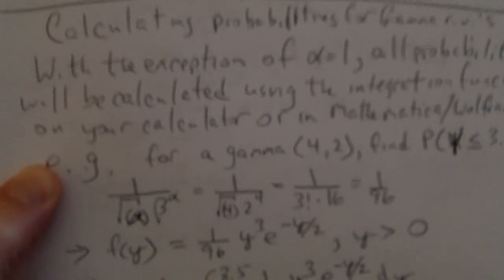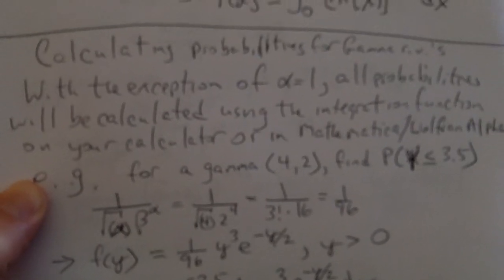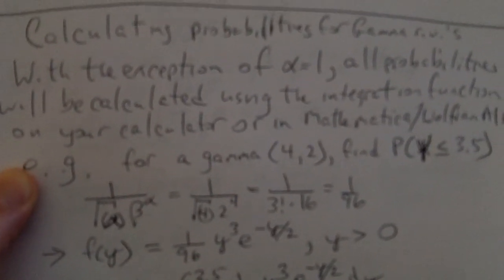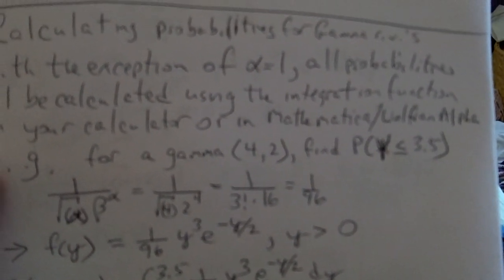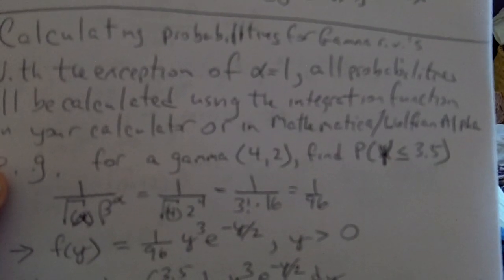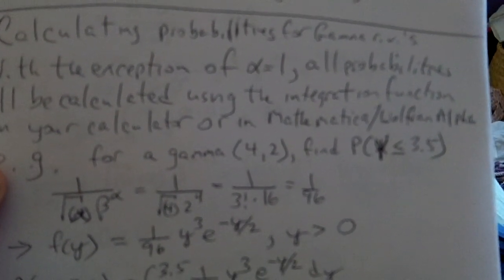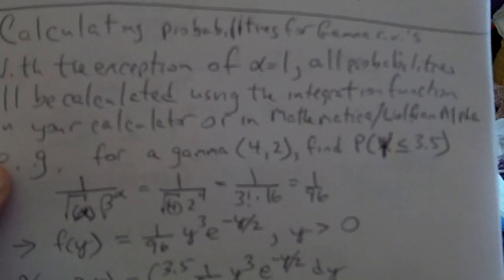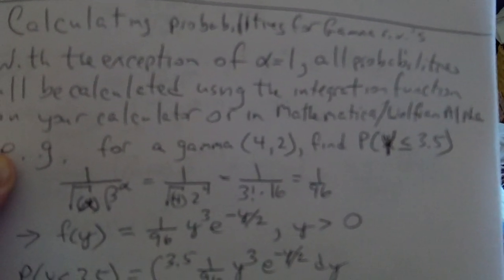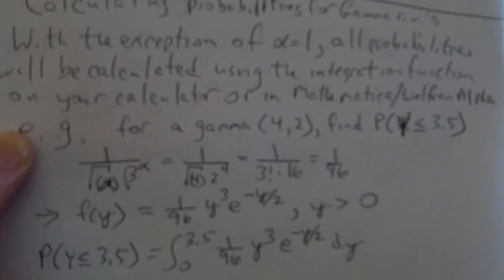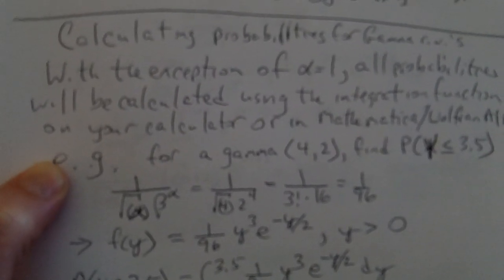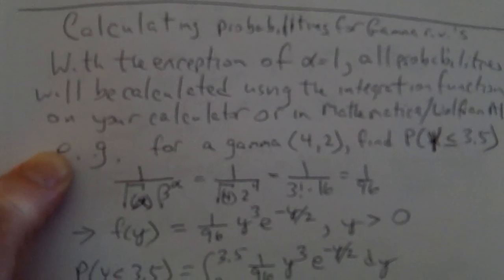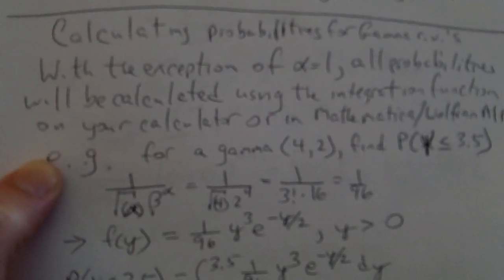There's not a lot given in the notes regarding calculating probabilities for a general gamma random variable, because unless alpha is equal to 1, the process by hand is either rather lengthy or not feasible — it has to be approximated numerically. If you had a situation where alpha is 4, regardless of what beta is, you could do the integration but you'd have to go through multiple repetitions of integration by parts, and that's not the purpose here.